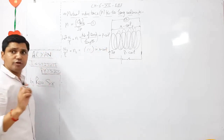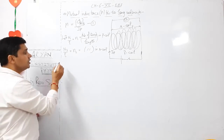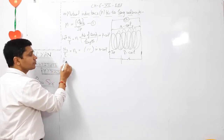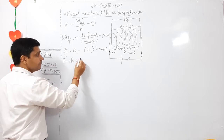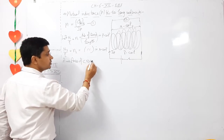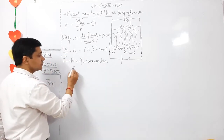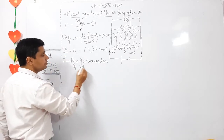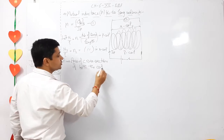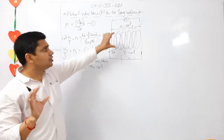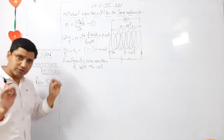Let A be the area of cross-section of both the coils. Since the secondary coil is wound directly over the primary coil, the area of cross-section is almost the same for both.